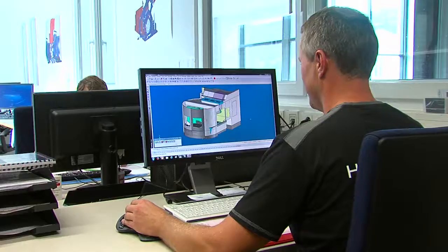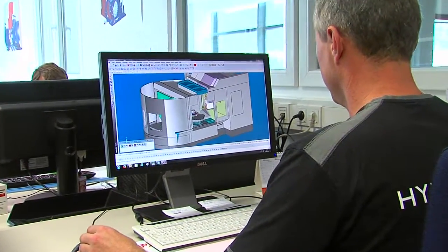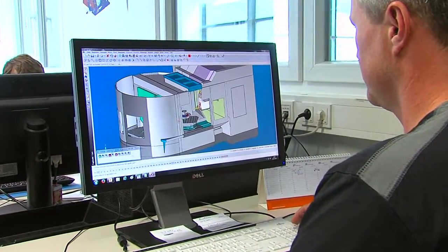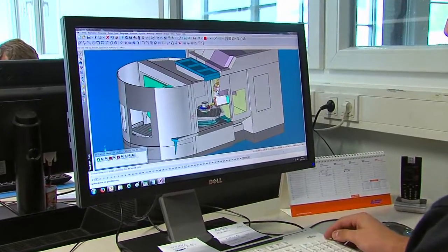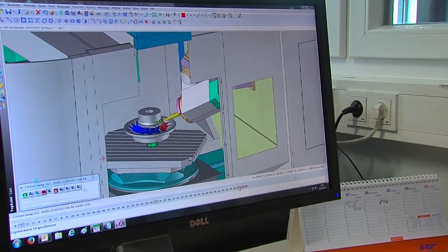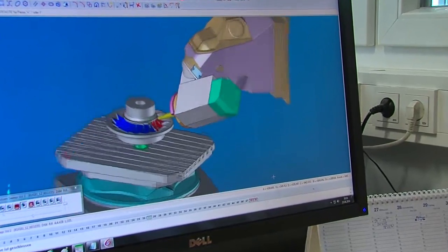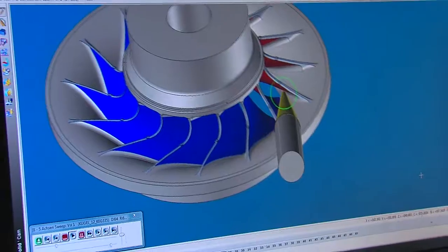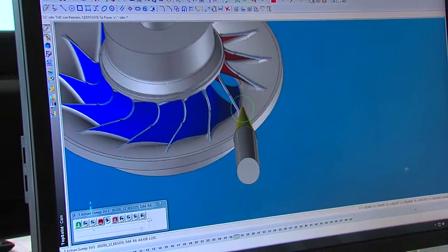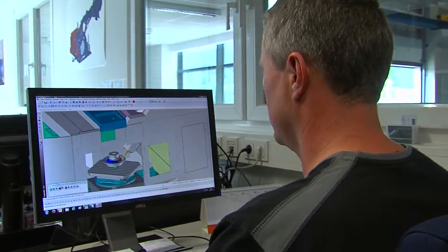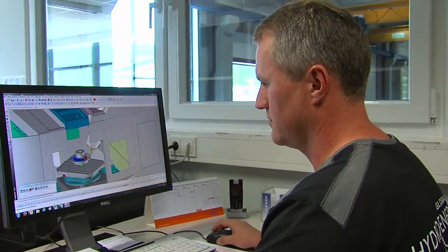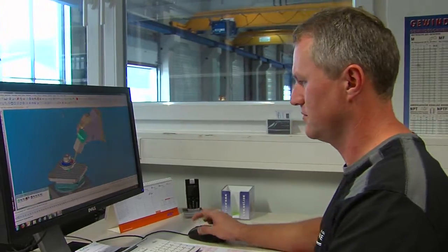Once the 3D design of the Francis turbine has been completed, the machining process is programmed and simulated using the CAD CAM system. The milling duration and the material to be removed are checked by using the simulation. This is important to ensure that there are no hindrances or collisions between the milling machine and the workpiece. The milling program is then automatically transferred to the machining center.